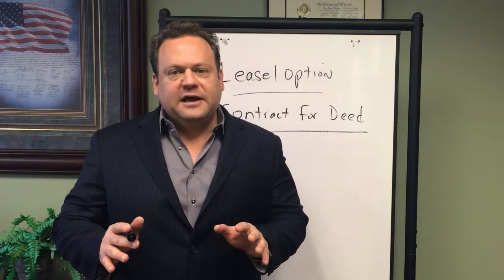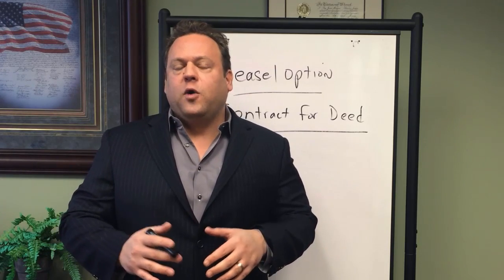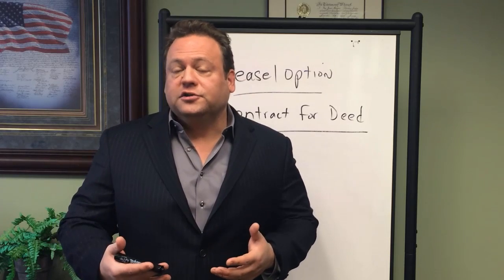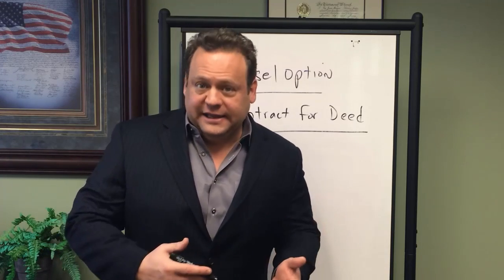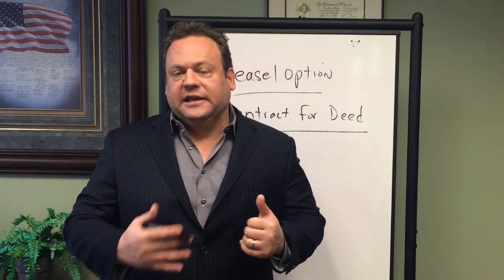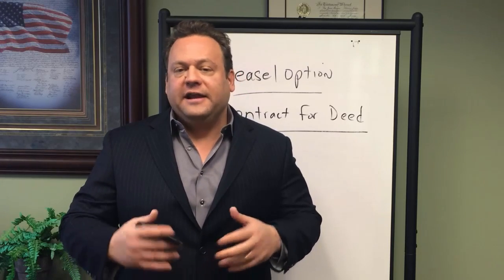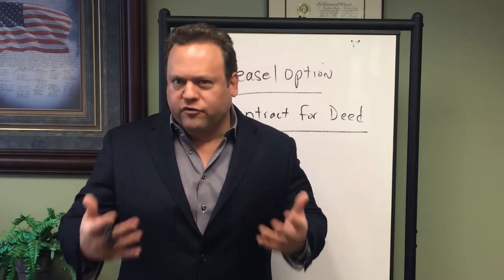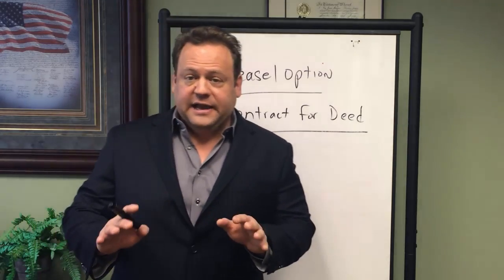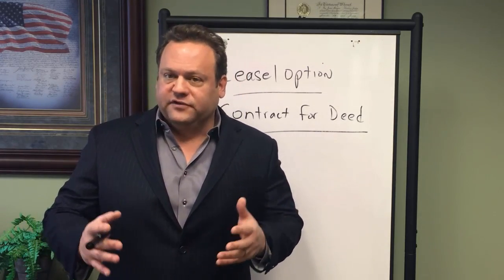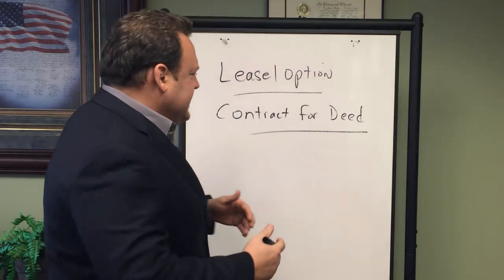A lease with option is not really a sale for certain purposes, and for others it is. For example, for the purposes of disclosures required by your state, municipality, or even federal disclosures like lead, I would err on the safe side and give the same disclosures you would on a sale or a lease on a lease option. Some municipalities or states might consider that a sale for the purposes of disclosures, so I would err on the side of over-disclosure. Whereas a contract for deed or installment land contract is a sale for sure — it is not a landlord-tenant relationship. For the purposes of disclosure, you do the regular disclosures required by your state, municipality, or the federal government on a sale of a property.